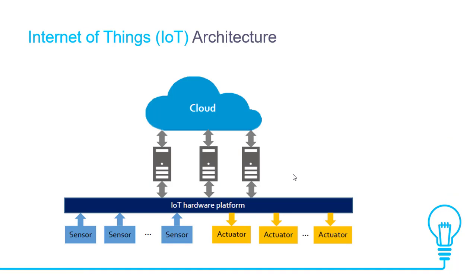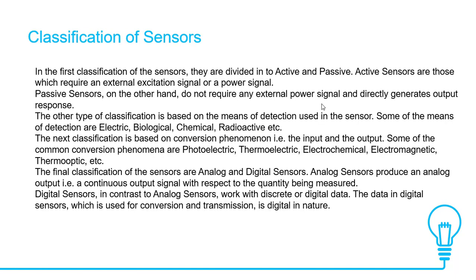Now we will see what is Internet of Things IoT architecture. It starts with the sensor. For example, if you take an AHU, the sensor starts with the temperature sensor, then pressure transducer sensor, and so on. The sensor is connected with the IoT hardware platform, which we call a controller. From this controller there are gateways, and this gateway is directly connected to the cloud. There are various protocols used in this configuration, which we are going to see one by one in this course.